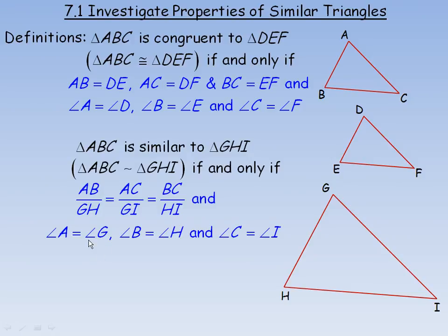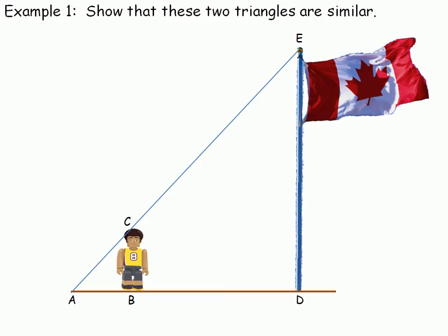Angle A and angle G are equal, angle B and angle H are equal, and angle C and angle I are also equal. That covers the definitions of congruent and similar. We are going to focus mostly on similar, but you need to look at the definition of congruent at the same time. The next two pages we'll take a look at a few examples.